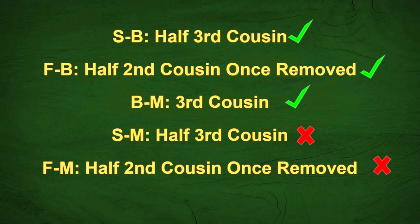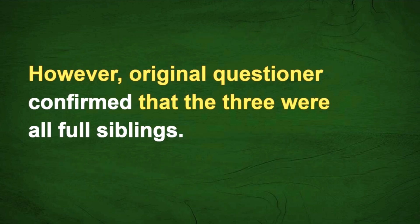To the viewers that said, 'Hey, what about a half-relationship here?' — you're right. That half-relationship could explain why DNA was not shared between S and M, and F and M. However, the original questioner had already confirmed that the three were all full siblings, and that's why I did not bring up half-siblings during the video.